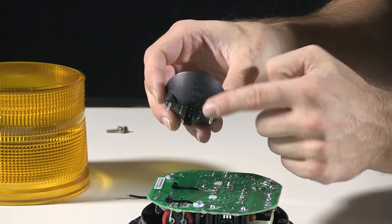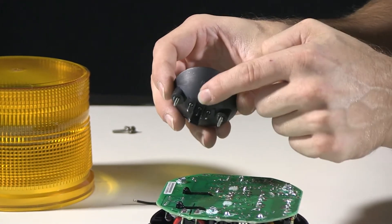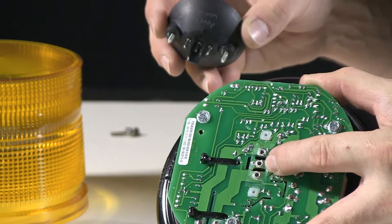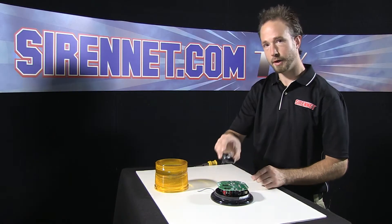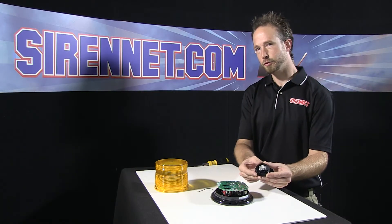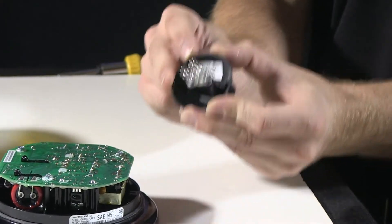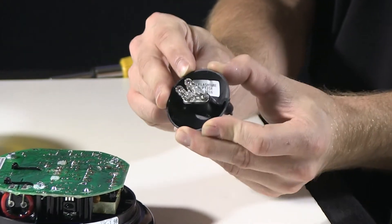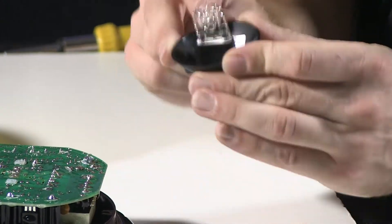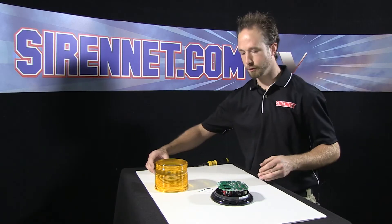You can see on the base here, you have guide teeth and a total of three pins. And those, again, align to the power supply. I'm going to go ahead and set this aside for a moment. But before I do, if you ever need to replace it, good thing to know, this part here is an FT20A. That's your part number for the replacement strobe. I'll set this over to the side here.